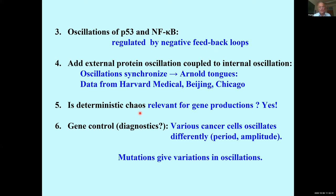Last year we asked ourselves whether deterministic chaos is really relevant for gene production, and to our big surprise, we were able to show that it is in some cases. This leads us to speculate that by these two coupled oscillators, can you do gene control, or maybe even diagnostics? It turns out that various cancer cells might oscillate differently with different periods and amplitudes, and mutations give variations in the oscillations.